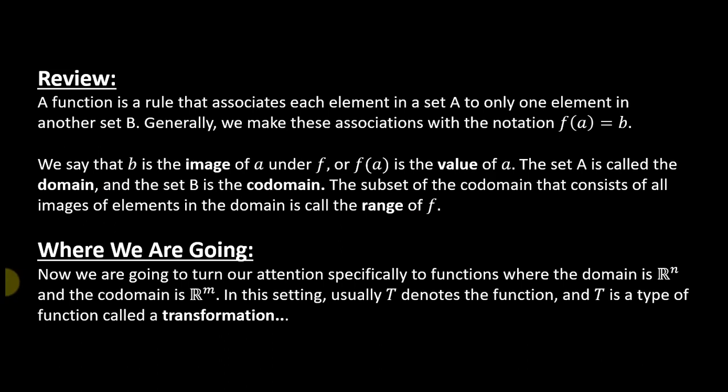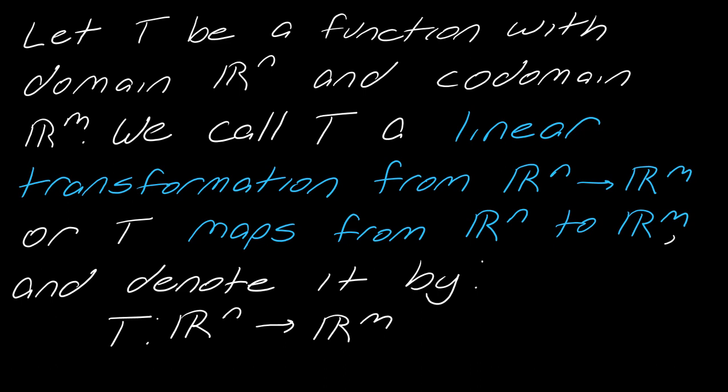So where we are going is we want to turn our attention specifically to functions in this domain Rn and the codomain Rm. And so in this setting, to denote the function, we use the letter T, and T is a type of function called a transformation. So now we're going to talk about this idea of these transformations from Rn to Rm. So we're going to let T be a function with the domain in Rn and the codomain in Rm. So we specifically then call T a linear transformation from Rn to Rm, or equivalently we say T maps from Rn to Rm. And then we denote this with this notation. So this is how you know that we're specifically referring to a transformation, and you know exactly what the domain and the codomain are by this notation.